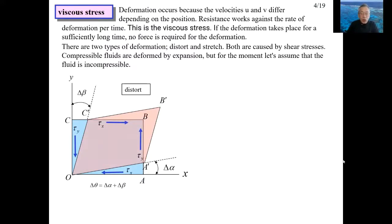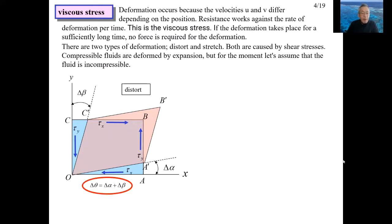Left figures show the case where shear stresses tau x and tau y act on the control volume of the sky blue rectangle, and it transforms the rectangle into the parallel black shape. The thickness of the control volume is 1. Shear stress tau x acts along the OA plane and tau y acts along the OC plane. As a result, the control volume OABC transforms into the pink OA'B'C'. The magnitude of deformation can be given by the amount of change in angle delta alpha plus delta beta.